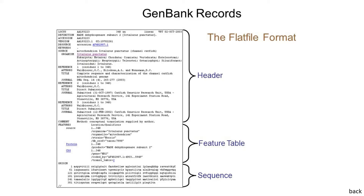The flat file format consists of a header, feature table, and sequence. The header contains information about accession number, source, reference, title, etc. The features section includes annotation information about the gene and gene product, as well as regions of biological significance reported in the sequence, data identifiers, and qualifiers. The third section, sequence, starts with 'ORIGIN' and ends with two forward slashes.